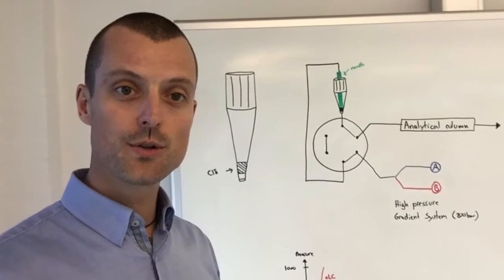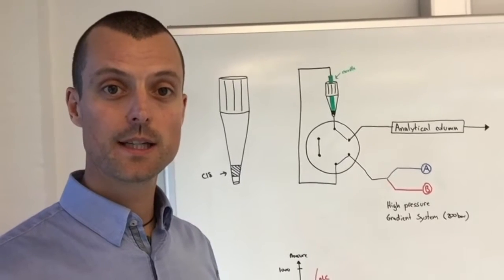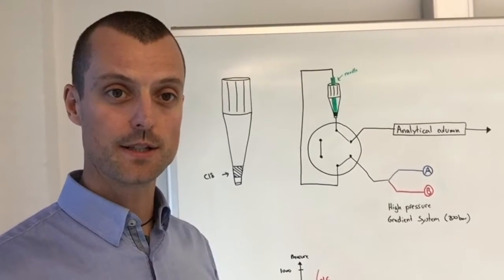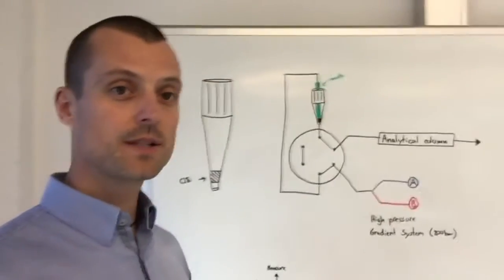A stage tip is really just a pipette tip with a little bit of C18 material at the bottom. And these tips are commonly used in proteomic workflows to clean up and desalt the sample prior to analysis.